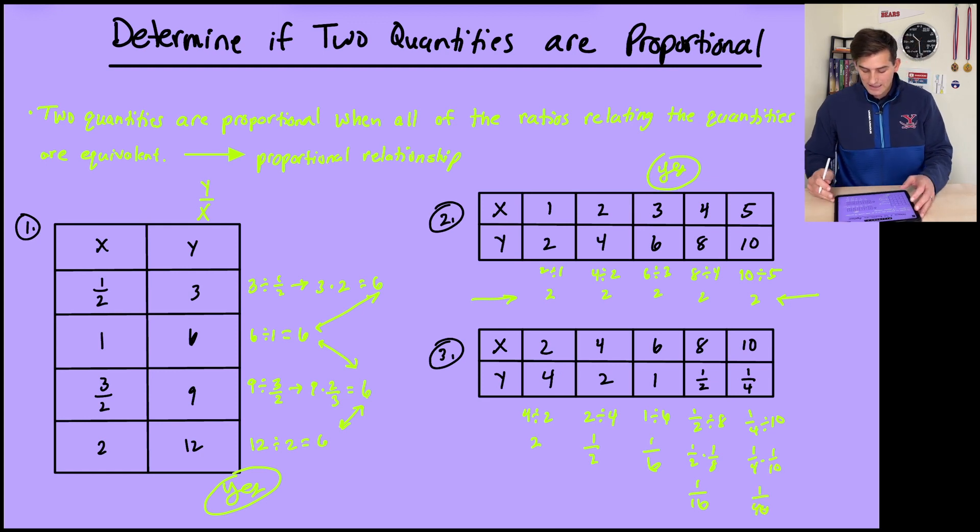Wow. So we had a quotient of 2, then 1/2, then 1/6, then 1/16, then 1/40. So for number three, we're going to say no. Those two quantities are not proportional.